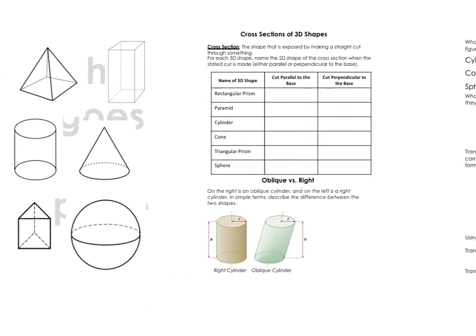For a rectangular prism, if we were to cut parallel to the base and open it up to see what shape is exposed, that would be a rectangle. And the same thing if we were to cut perpendicular to the base — cutting it the other way and opening it up — that shape would also be a rectangle.